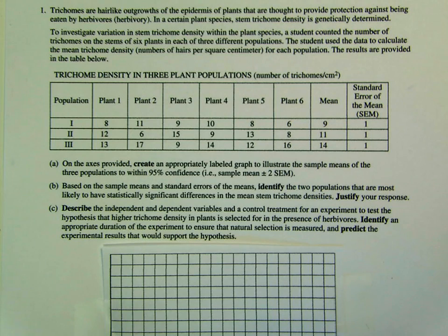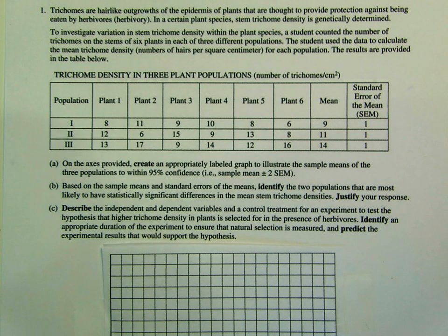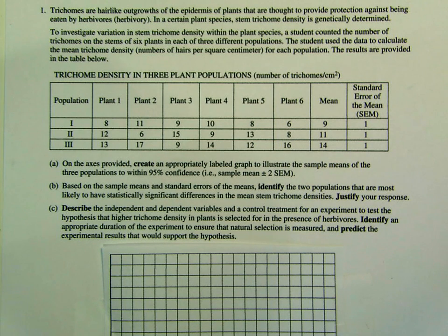You can look up student samples of answers to this question and the scoring rubrics online, and I'll try to remember to post those to the website. Question number one said: trichomes are hair-like outgrowths of the epidermis of plants that are thought to provide protection against herbivory. In a certain plant species, stem trichome density is genetically determined. A student counted the number of trichomes on the stems of six plants in each of three different populations and used the data to calculate the mean trichome density — number of hairs per square centimeter — for each population. The results are provided in the table below.